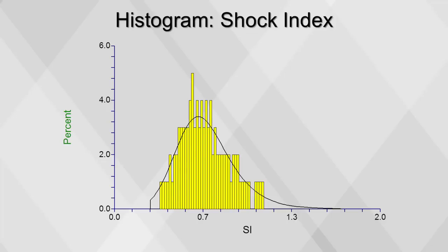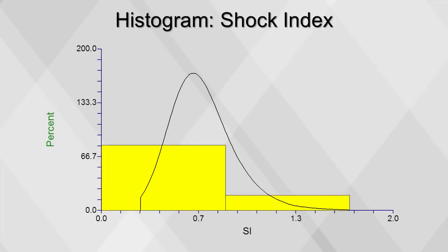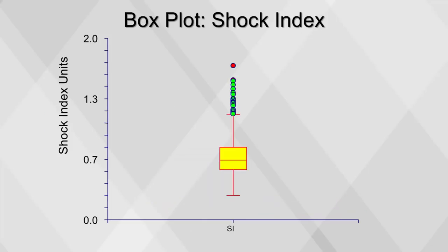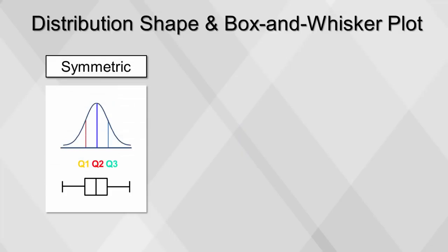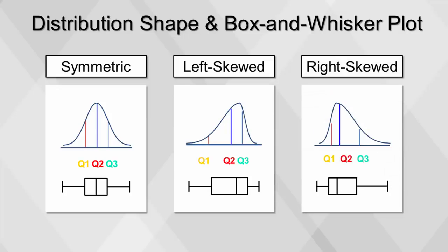Using 100 bins shows too much detail and is not useful. Likewise, too few bins tells us little about the underlying shape of the distribution. Note that the box plot also shows the same positive or right skew observed in a histogram for shock index. The median inside the box plot also provides information on skewness — if the median is at the center, the distribution is symmetric; if the data have a left skew, the median will be pulled to the right; if the data have a right skew, the median will be pulled to the left.